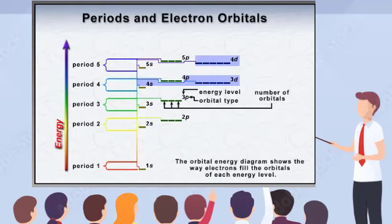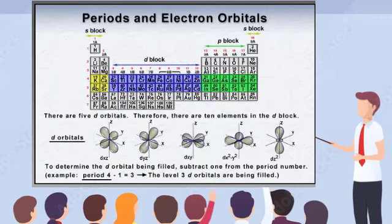The reason D orbitals belong to a lower energy level than the period number where they occur relates to quantum mechanics. For now, it will suffice to know that when determining which D orbital is being filled in a period, you can simply subtract one from the period number.